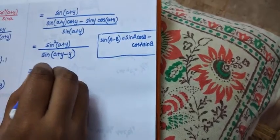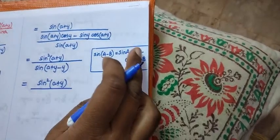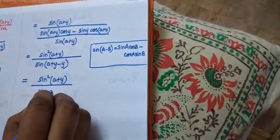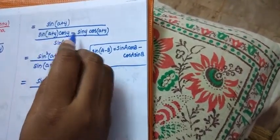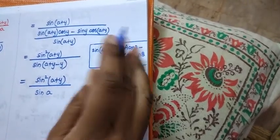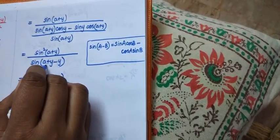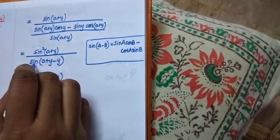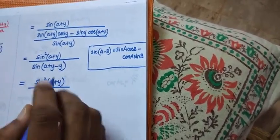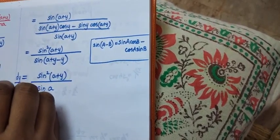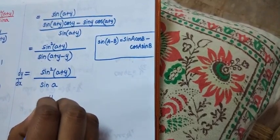Applying that formula: here a is (a+y) and b is y, so the denominator becomes sin((a+y) minus y), which simplifies to sin a. Therefore, dy/dx equals sin squared(a+y) divided by sin a. Hence proved.